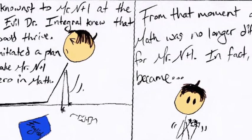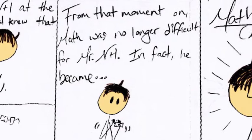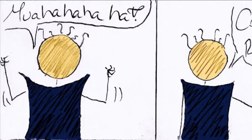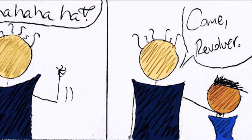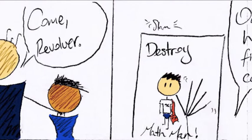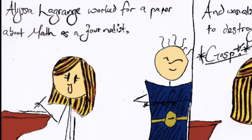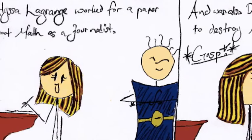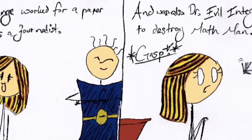From that moment on, math was no longer difficult for Mr. N-plus-1. In fact, he became your friend! Come, Revolver. Our time has finally come. Alyssa Lagrange worked for a paper about math as a journalist, and was also Dr. Evil Integral's plan to destroy Math Man.